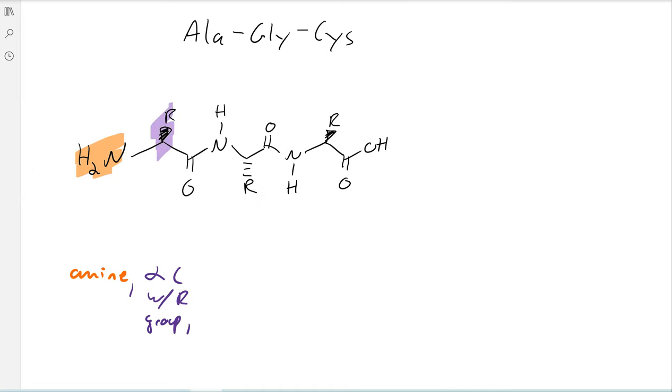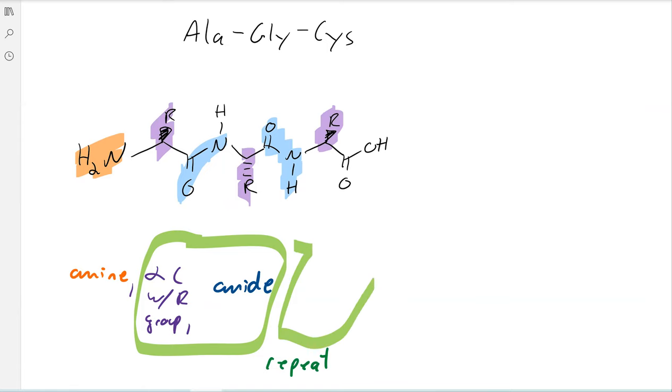Then the alpha carbon with the R group. So there's the alpha carbon with R group, alpha carbon with R group, alpha carbon with R group. And then following the alpha carbon with R group, there's going to be an amide. So there's our amide. Amide. And then this section is going to get repeated. Right? Notice we have multiple of purple and blue, right? Multiple alpha carbon with R group, followed by an amide. And so that'll get repeated again and again and again until you reach the end of your polypeptide.